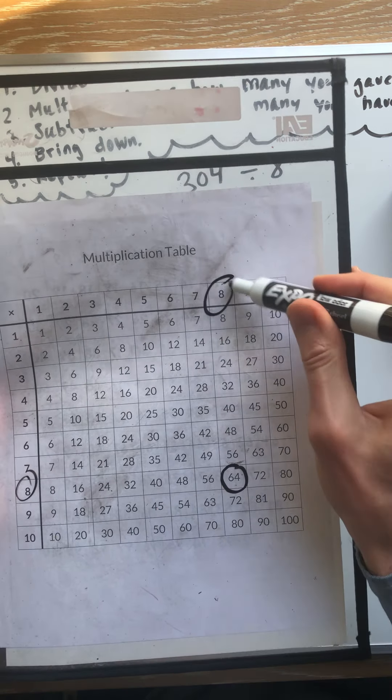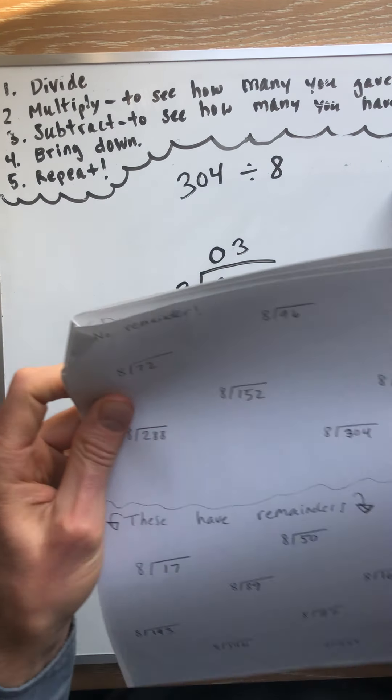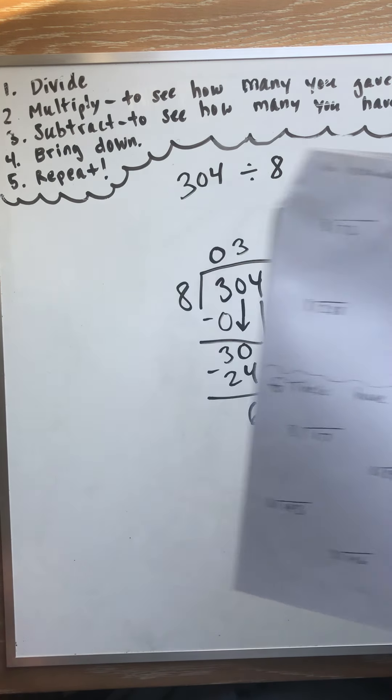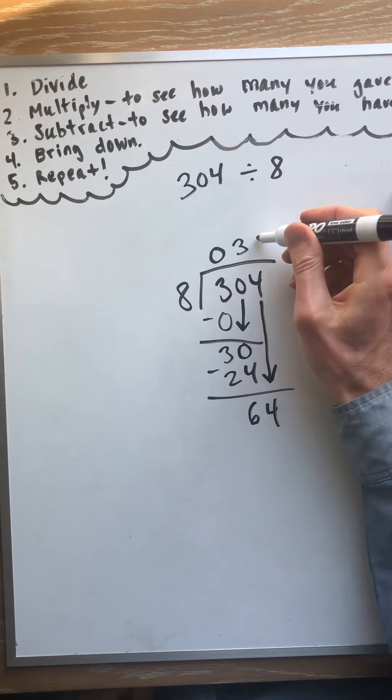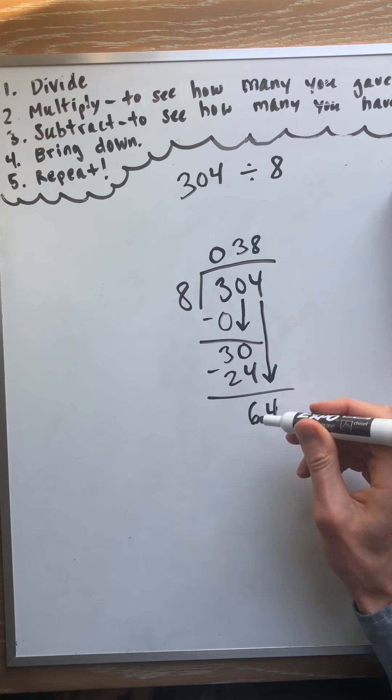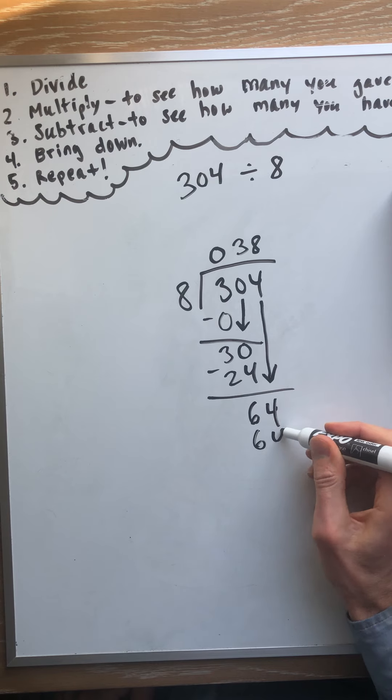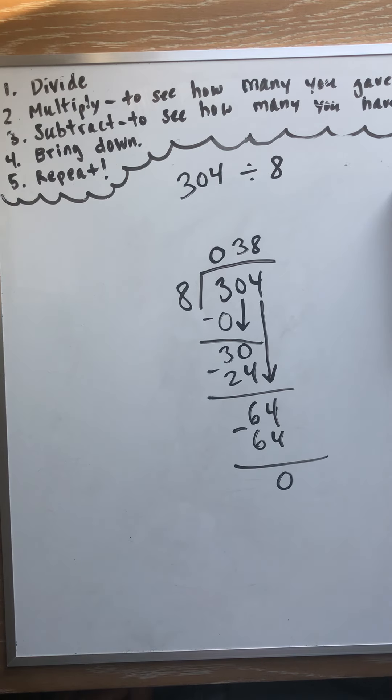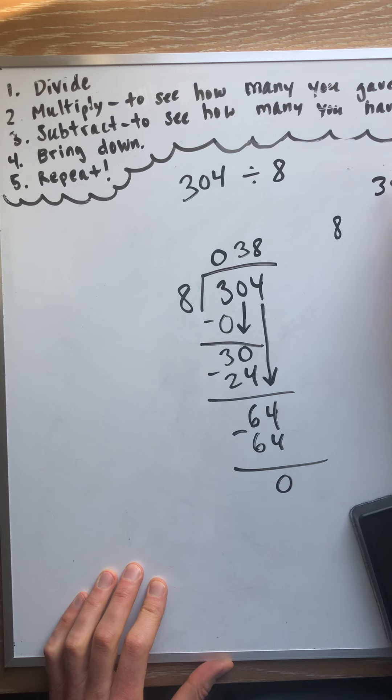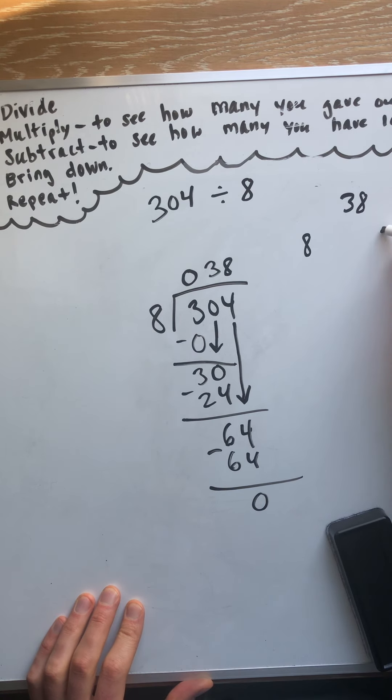8 times 8 is 64. And we knew it was going to fit perfectly, because this whole page says no remainder. So they're all going to fit perfectly for this top of the page. Okay, so 8 times 8. Multiply to see how many gave out. Well, we just gave out all of them. So that means 8 times 38 is 304.